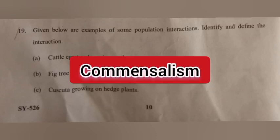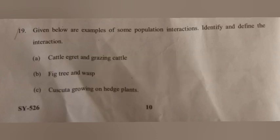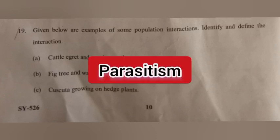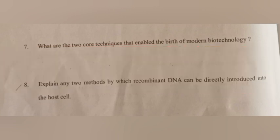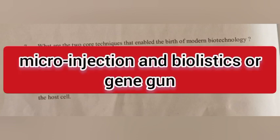Question 19: Given below are examples of some population interactions — identify and define the interaction. A) Commensalism. B) Mutualism. C) Parasitism. Question 20: Explain any two methods by which recombinant DNA can be directly introduced into the host cell. Answer: Microinjection and biolistics, also known as the gene gun method.